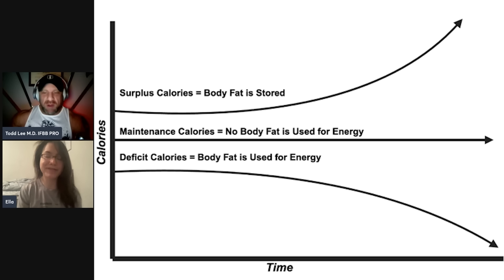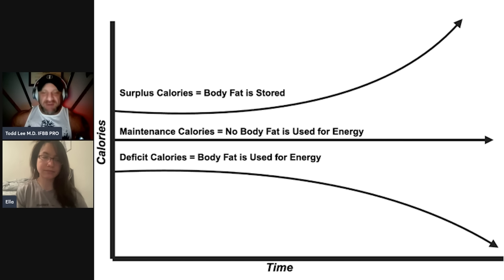To paraphrase: instead of determining caloric status by body weight, we define it by fat. You're losing fat because you're in a calorie deficit, gaining fat because you're in a calorie surplus, or maintaining fat because you're at calorie maintenance.